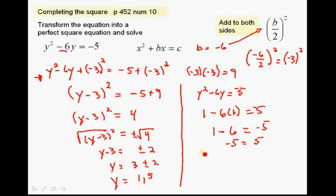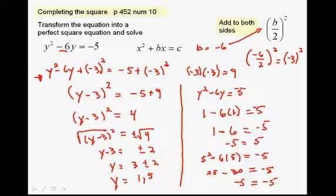Now we'll put 5 in there. 5 squared minus 6 times 5 equals negative 5. 5 squared is 25. 6 times 5 is 30 equals negative 5. That's really sloppy, sorry. 25 minus 30 is negative 5 equals negative 5. The check proves accurate. Our answer is correct. y equals 1 and y equals 5. Okay, that is it.